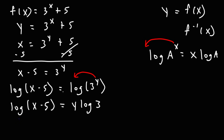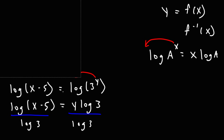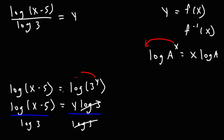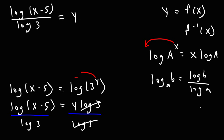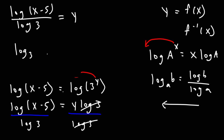In order to get y by itself, we need to divide both sides by log 3. So now we have log(x minus 5) over log 3, which equals y. Using the change of base formula — log base a of b equals log b divided by log a — we can write this division of two logs as a single log. So log base 3 of (x minus 5) is equal to y.